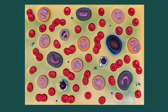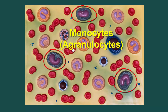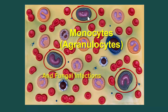Next we have monocytes, listed here under number three. You're going to find these more often in a viral infection.